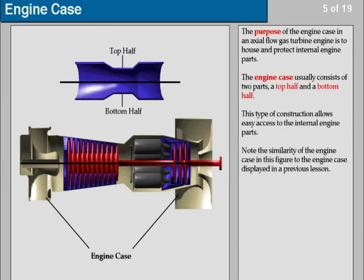The purpose of the engine case in an axial flow gas turbine engine is to house and protect internal engine parts. The engine case usually consists of two parts: a top half and a bottom half. This type of construction allows easy access to the internal engine parts. Note the similarity of the engine case in this figure to the engine case displayed in a previous lesson.